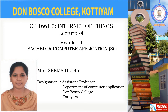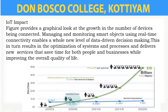The Internet of Things, or IoT, refers to the billions of physical devices around the world that are now connected to the internet, collecting and sharing data. Connecting up all these different objects and adding sensors to them adds a level of digital intelligence to devices that would be otherwise dumb, enabling them to communicate real-time data without involving a human being.